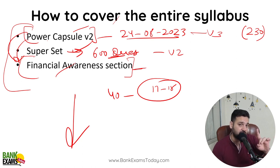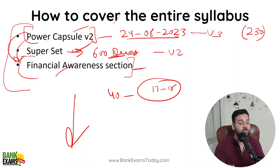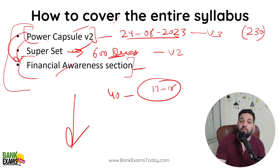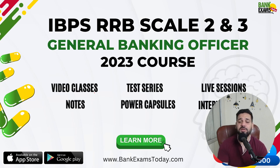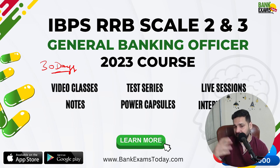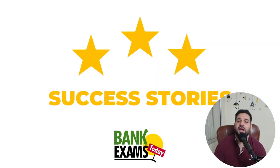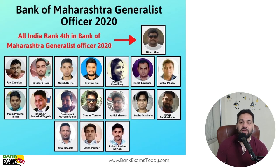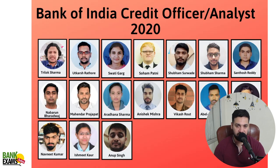That is the right way to score more than 25 marks. Many of our students have scored 30 out of 40 in Financial Awareness. Trust me, this section will also help you in the interview — most of you watching this are going to crack the exam. When you come back for interview preparation, I'll give you the same study material — the RBI circulars, static banking content — because that's what the interview panel asks. Links are available in the description. A 30-day course plan is also available with test series, Power Capsule, Superset, and video classes. Thank you and have a very nice day. Bye bye.